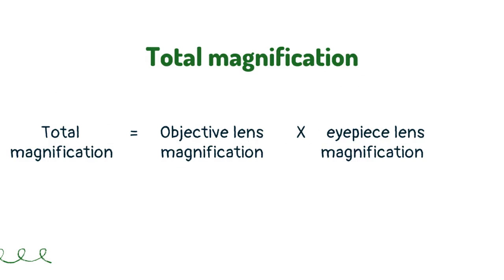Total magnification equals the objective lens magnification multiplied by the eyepiece lens magnification.